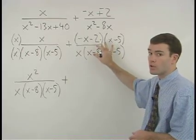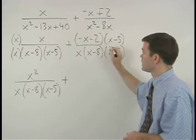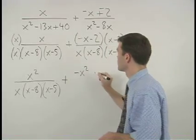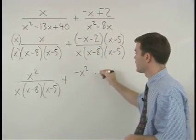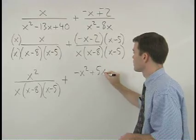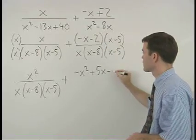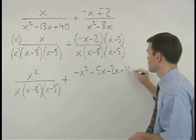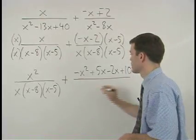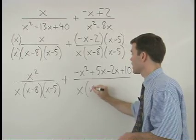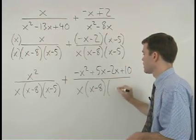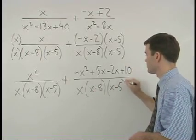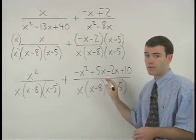So we must FOIL to get negative x squared plus 5x minus 2x plus 10 over x times x minus 8 times x minus 5. Be very careful when FOILing.